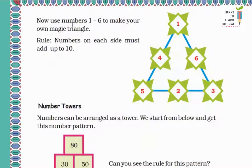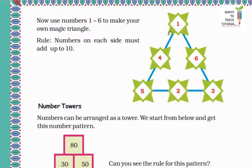Now use numbers 1 to 6 to make your own magic triangle. The rule is: the numbers on each side must add up to 10. Let's check: 5 plus 4 is 9, plus 1 is 10. Same way: 1 plus 6 is 7, plus 3 is 10. Here 5 plus 3 is 8, and we need 10, so we place 2 there — 8 plus 2 equals 10. This is our magic triangle.